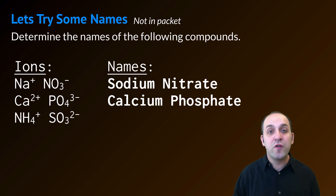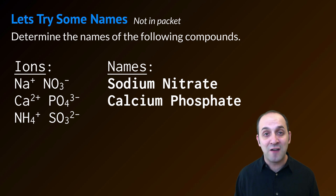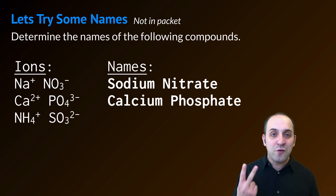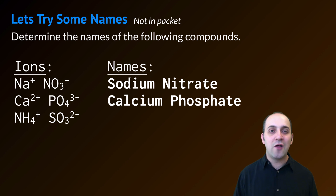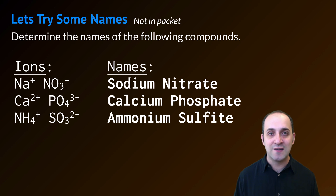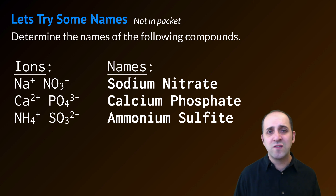Now that I know those, I can go in and figure out the names. The name of NaNO3 is sodium nitrate — nitrate just remains nitrate. I don't use the stock system here because sodium only has one possible oxidation state. Calcium also only has one possible oxidation state, so I'm just going to call that calcium. PO4 3 minus is phosphate, so my second compound is calcium phosphate. My last one is made out of two polyatomic ions, so I just put their names together: ammonium sulfite. Does that make sense? If it doesn't, take a moment and write down any questions that you have before we wrap up.